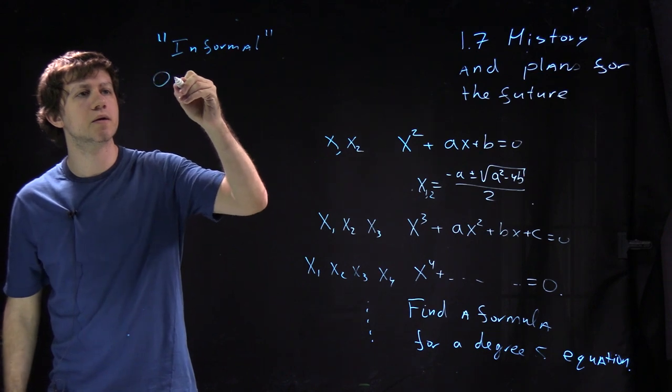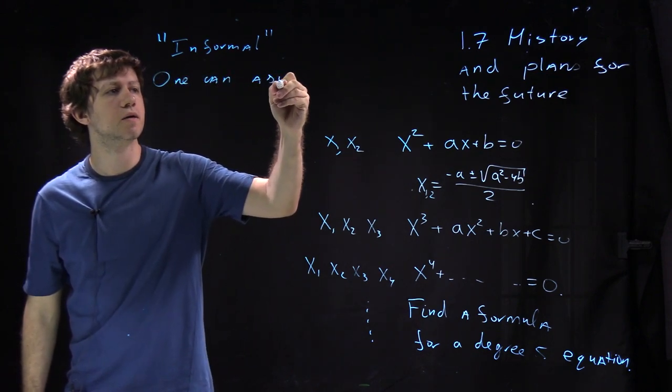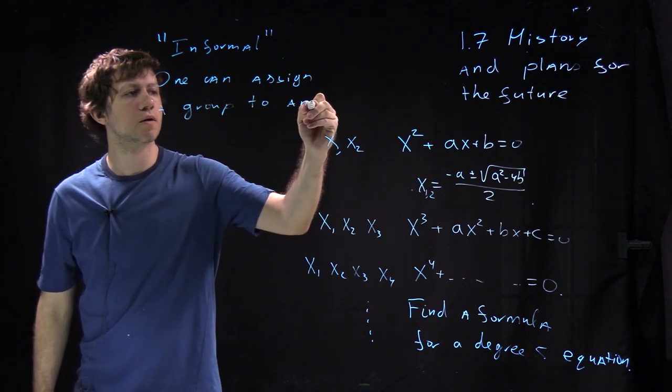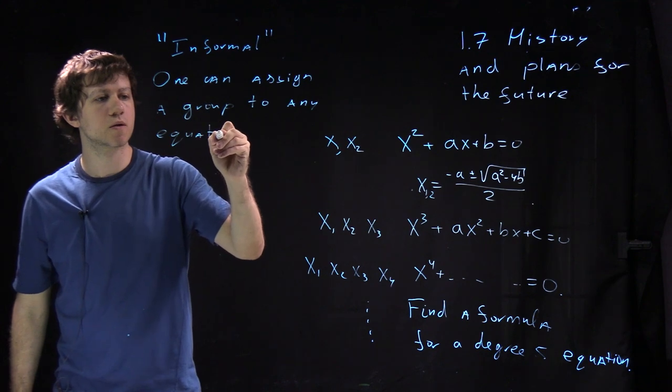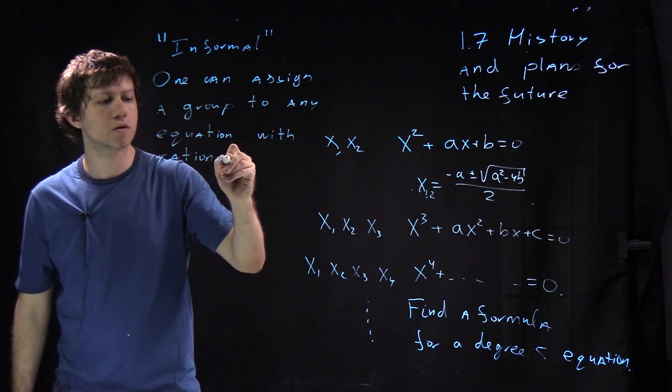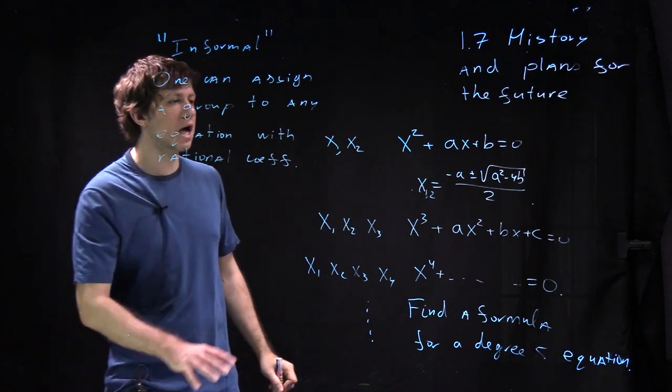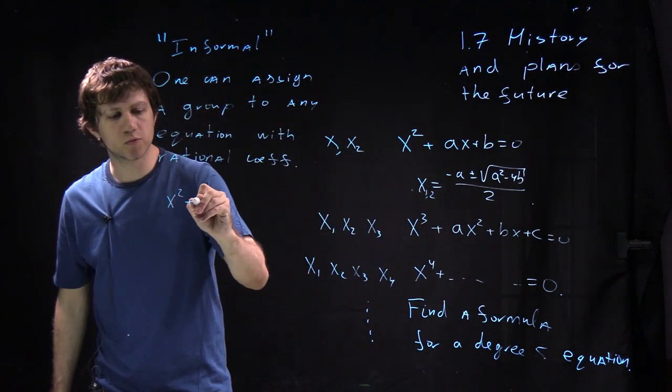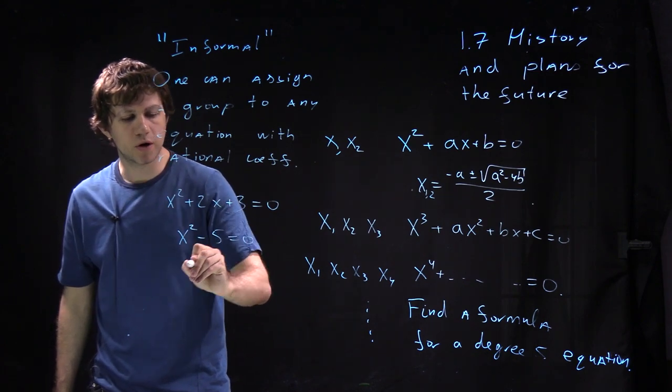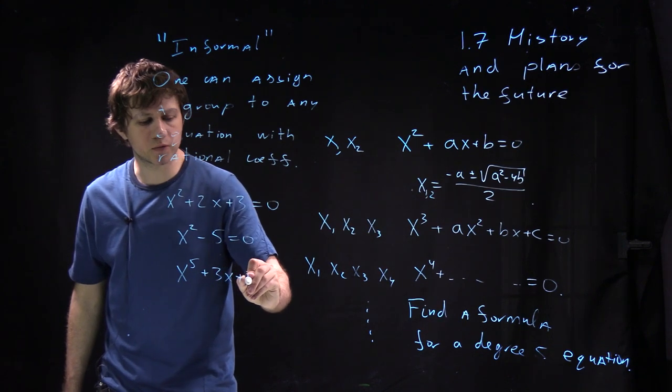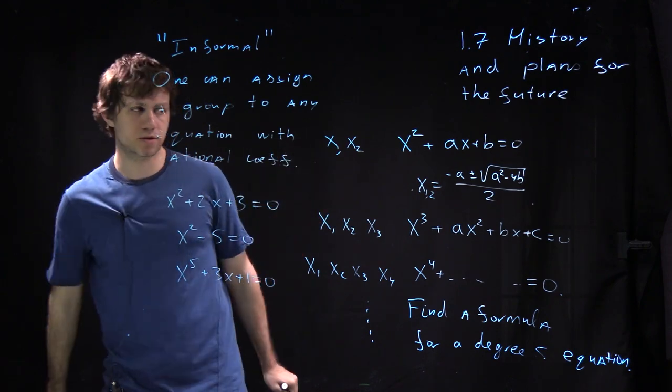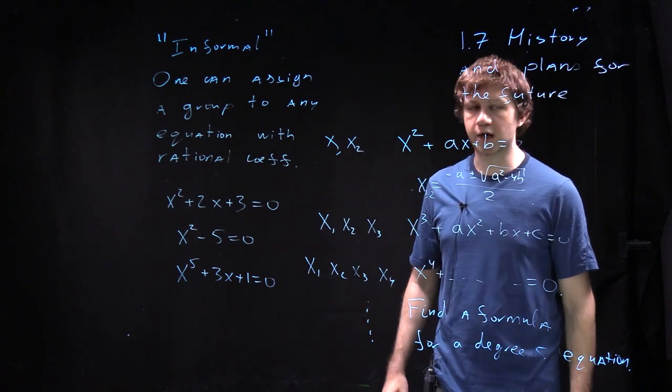So informal definition is as follows. So one can assign a group to any equation. So if you have an equation like x squared plus 2x plus 3 equal to 0 or say x squared minus 5 equal to 0 or x power 5 plus 3x plus 1 equal to 0, you can assign to each of them a finite group